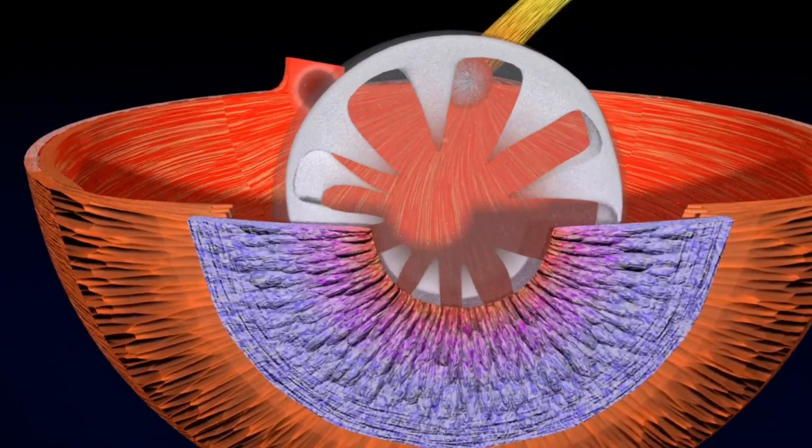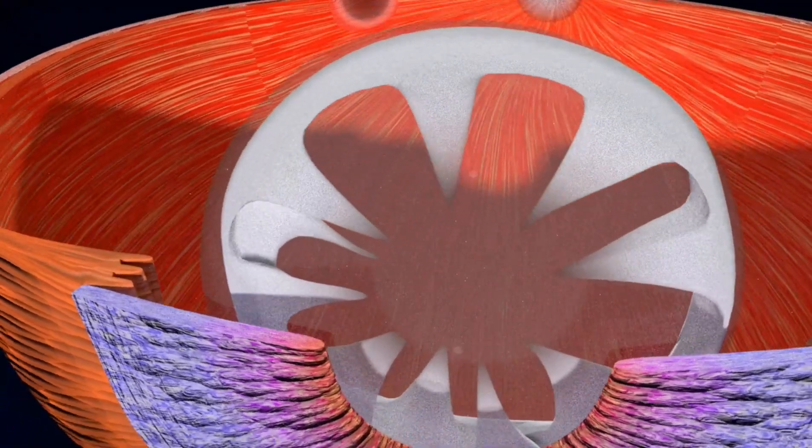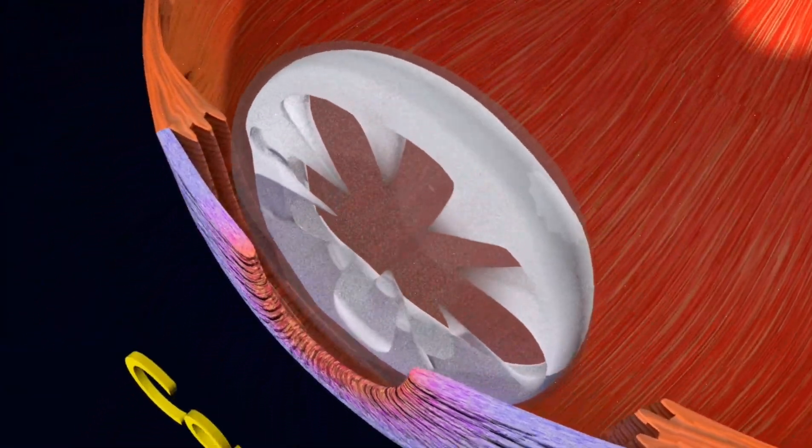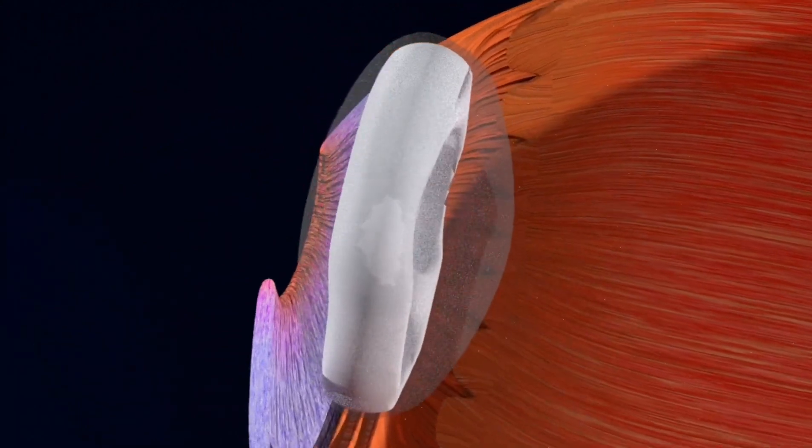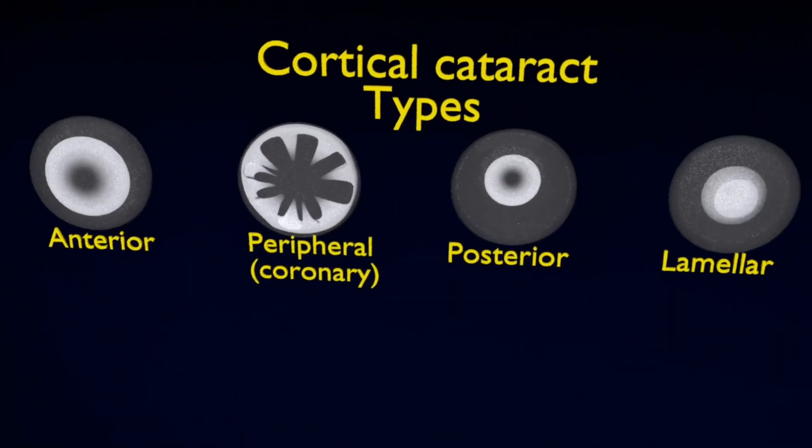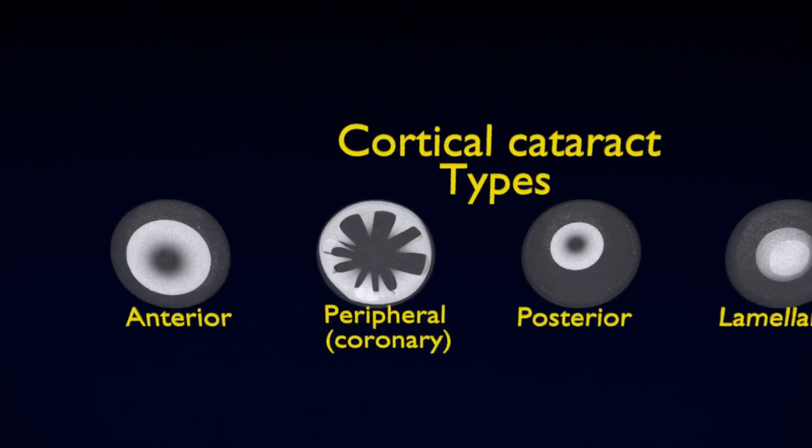Cortical cataracts are due to the lens cortex becoming opaque. They occur when changes in the fluid contained in the periphery of the lens cause fissuring. When these cataracts are viewed through an ophthalmoscope or other magnification system, the appearance is similar to white spokes of a wheel or wedges.